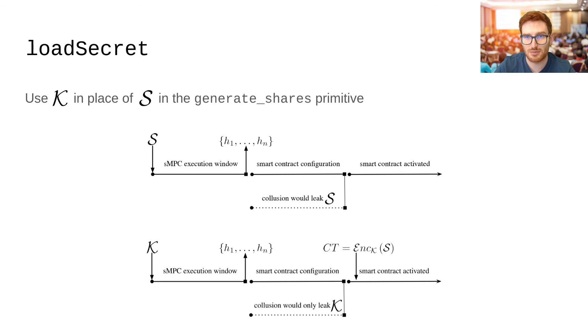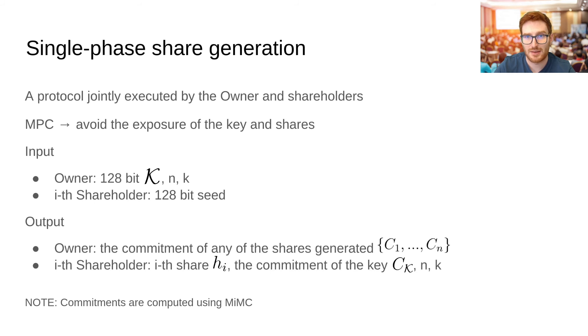We do that by using a random key instead of the secret during the share generation primitive. From the shareholders' perspective, there is no difference, as rewards and penalties are now associated with the management of the key. But from the owners' one, it avoids the exposure of the secret until the economic penalties have been activated. Now, in this last part of the presentation, we would like to discuss the share generation primitive.